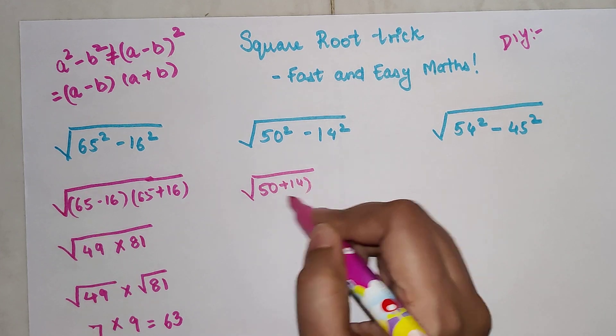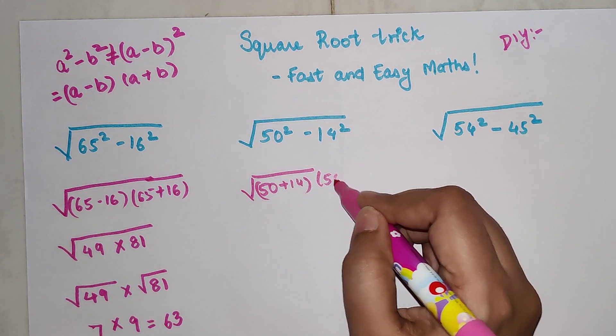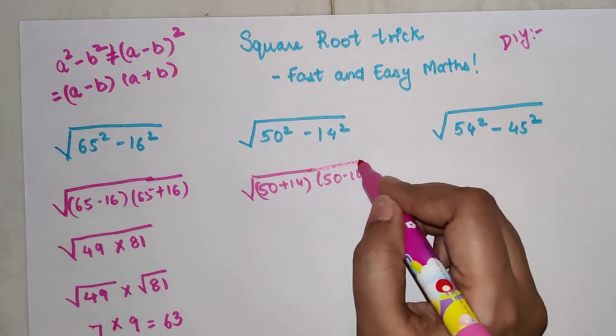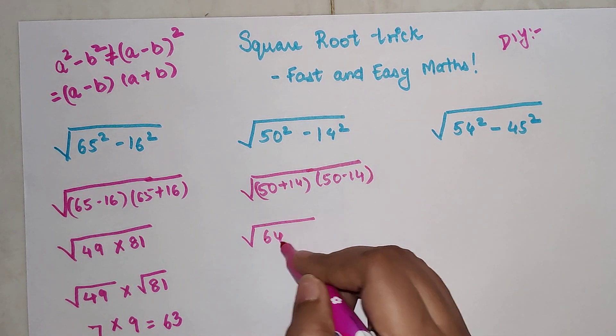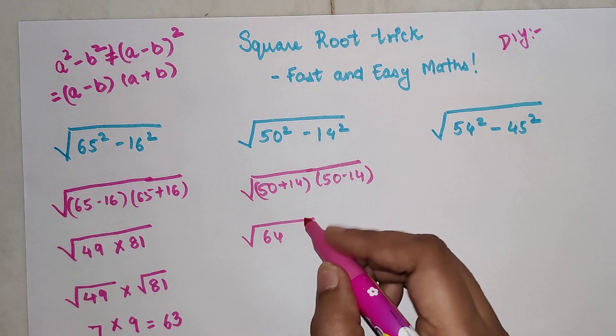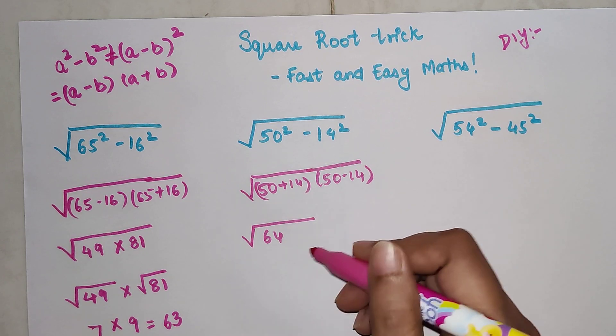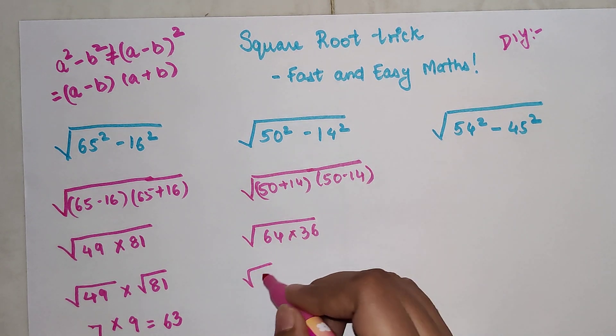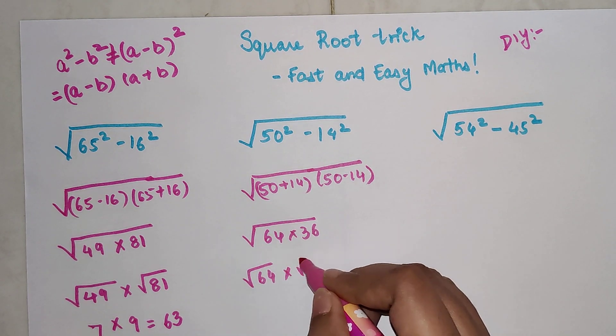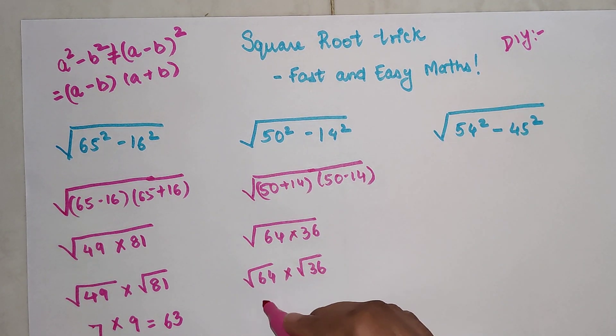Very quickly, this one will be (50 + 14) and (50 - 14) under the same root. 50 plus 14 gets you 64, 50 minus 14 gets you 36. We can break this: √64 times √36, so that gets you 8 times 6, which is 48.